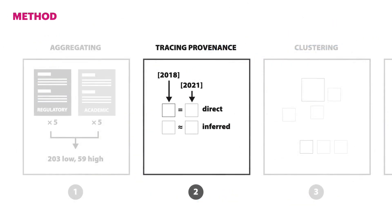In the second stage, we traced the provenance of each pattern to identify when it was first mentioned in the literature, and how pattern names had evolved over time. As one example of establishing these provenance trails, we can evaluate the pattern hidden information. In our ontology, hidden information subverts the user's expectation that relevant information will be made accessible and visible, instead disguising relevant information or framing it as irrelevant.